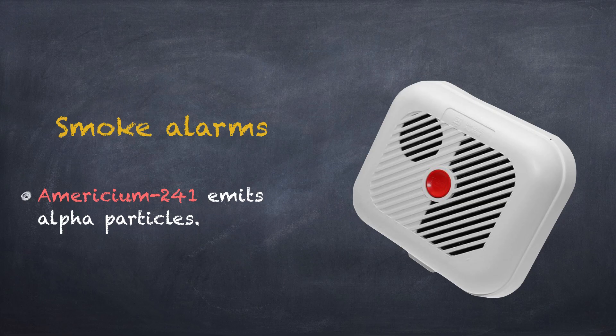Americium-241 is a radioisotope that emits alpha particles. It is used in smoke detectors. Alpha particles have a very low penetrating power. It cannot penetrate the skin.